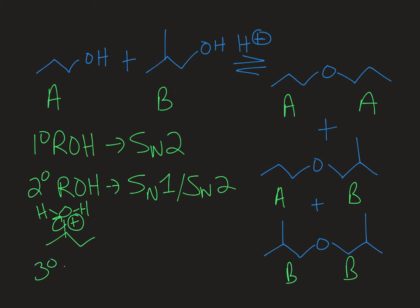And then last, the tertiary alcohol is definitely going to proceed through an SN1 type mechanism. It's too hindered for a backside attack. It has a very good leaving group and you get a relatively stable tertiary carbocation.